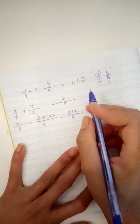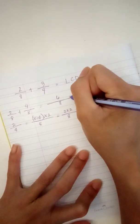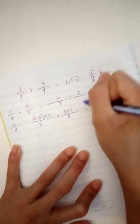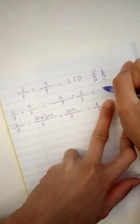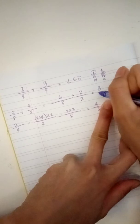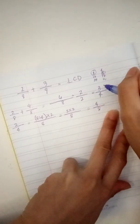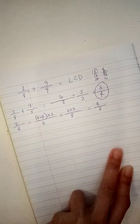Eight divided by eight. Two divided by two. It equals three over four. This is your final answer.